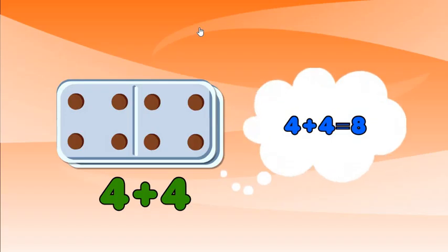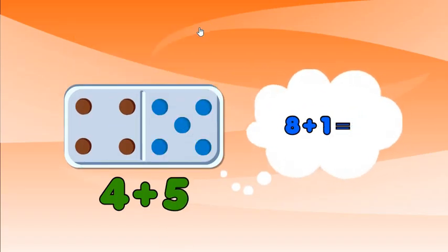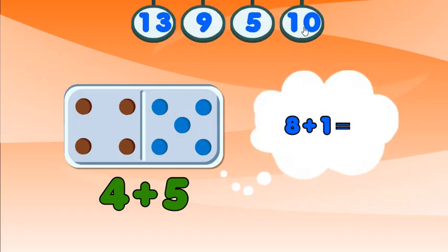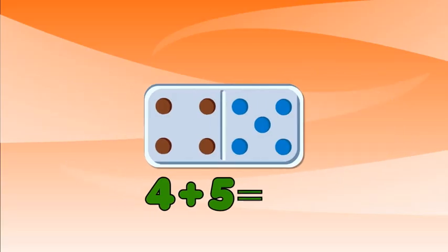Double 4 is 8, so now add 1. Find the answer to 8 plus 1. Excellent work. The answer to 4 plus 5 is 9.